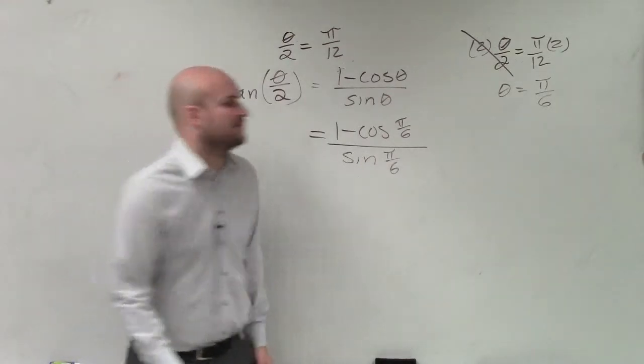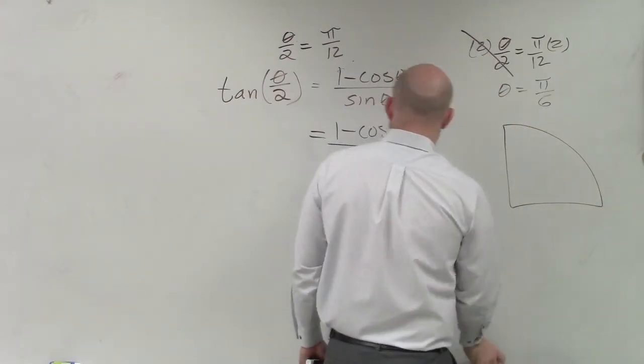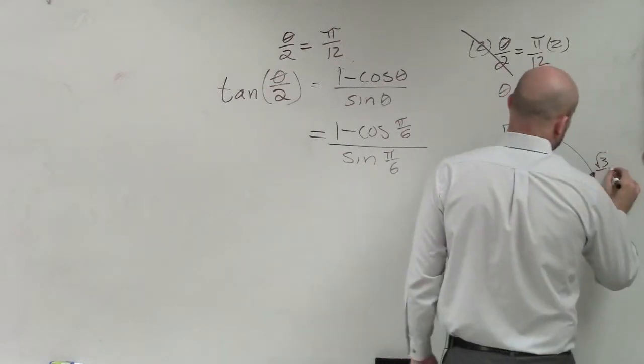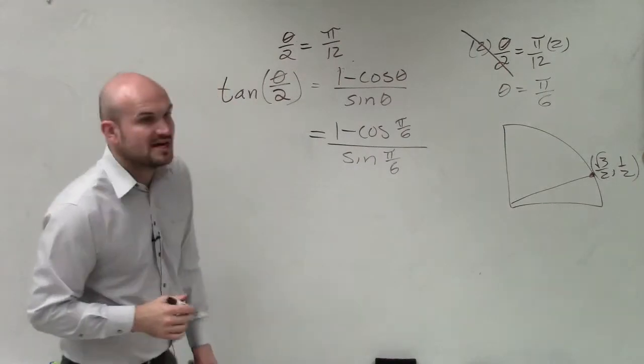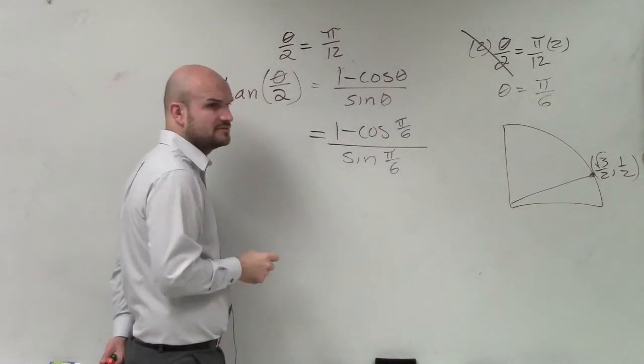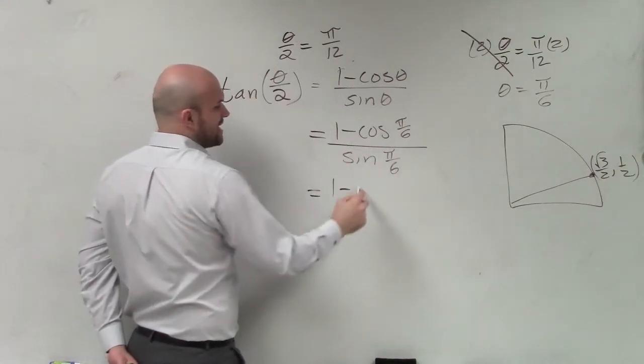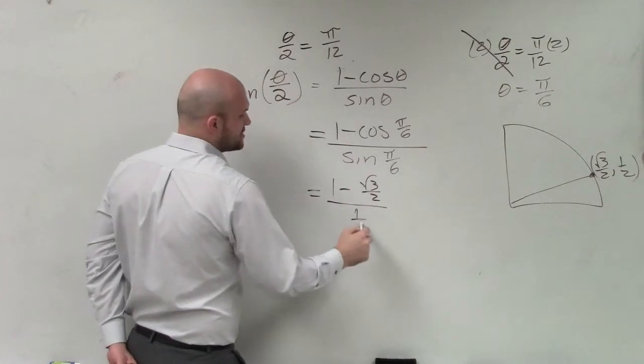So now I need to evaluate this, so I go and look at my unit circle. And if we have π over 6, which is going to be right here, which is √3 over 2 comma 1/2. So if I need to evaluate for cosine and sine - can you? So therefore, I have 1 minus cosine, which is √3 over 2, divided by sine, which is 1/2.